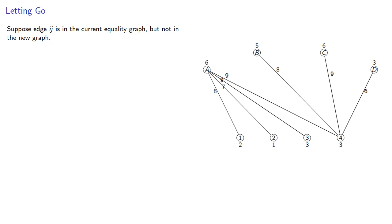So suppose edge ij is in the current equality graph, but not in the new graph. This would be because the weight of the edge is strictly less than the sum of the weights of the incident vertices.